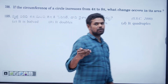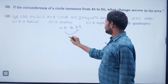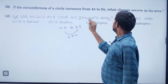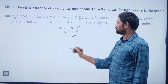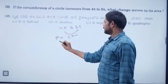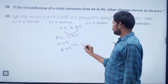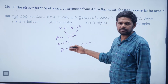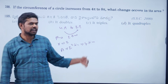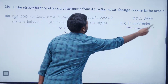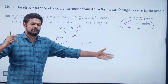If circumference of a circle increases from 4π to 8π — that is, it doubles (2 times) — then the radius also doubles (2 times), so area becomes 2² = 4 times. The area quadruples. The change is 300% increase.